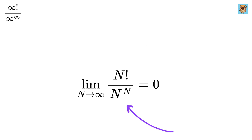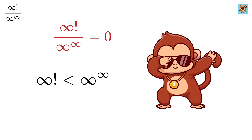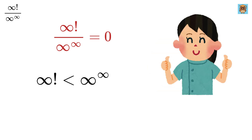Putting infinity here, we get the limit as infinity factorial divided by infinity raised to the power infinity, which is none other than 0. This means that infinity factorial grows slower than infinity raised to the power infinity — isn't this super cool!